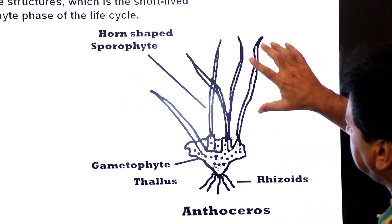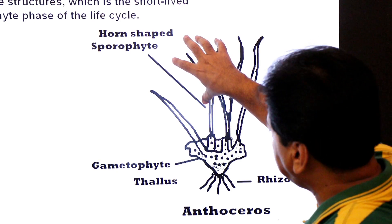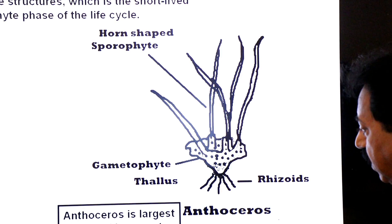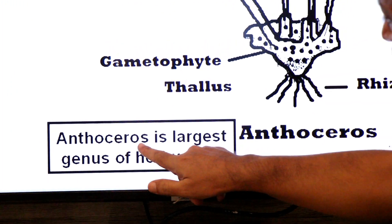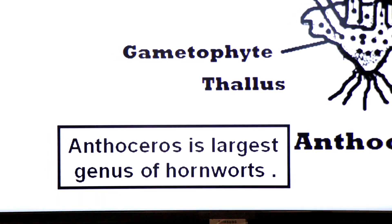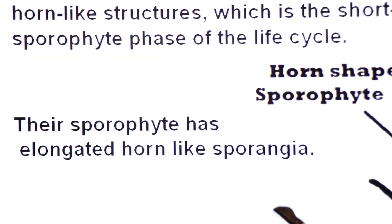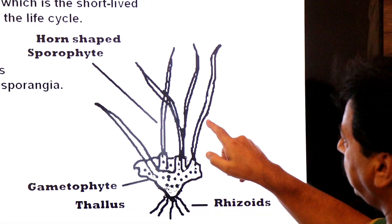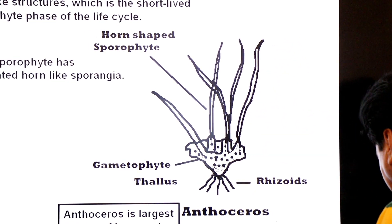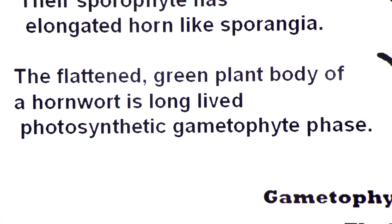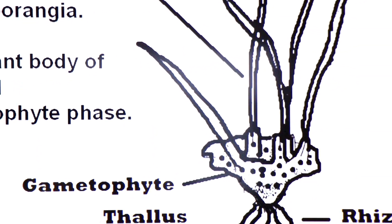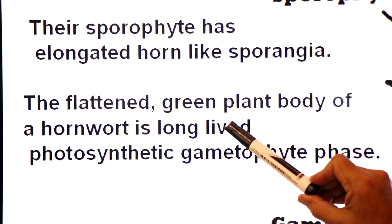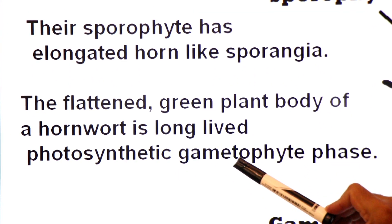These are the elongated horn-like sporangia, which is why they are called hornworts. Below, you can see the flat thallus-like gametophyte, which is the dominant generation. The diagram shows Anthoceros, which is the largest genus of hornworts. The flat green plant body of hornworts is the long-lived, photosynthetic gametophyte generation. A long-lived generation is always dominant, photosynthetic, and free-living.